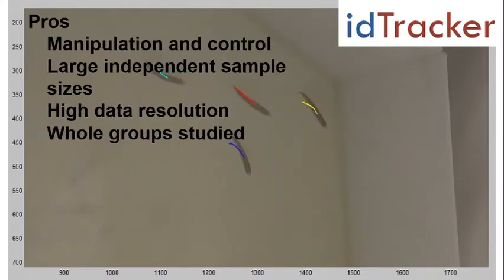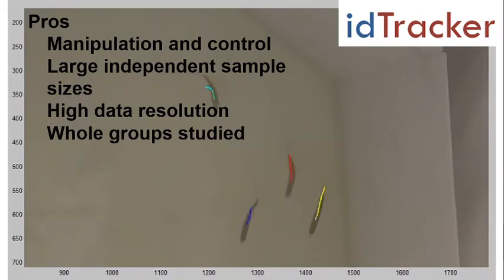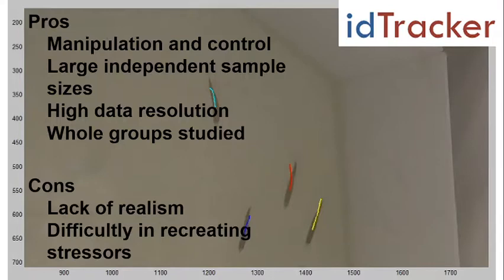Some of the pros are typical of lab work in general, but there's also the benefit that all individuals in the group can be monitored, which is needed for calculating social variables. If only a small portion of the group can be monitored — for example if loggers attached to only a small minority of the group are possible — then social parameters can't reliably be measured if you don't know where most of the other individuals are. But like many other lab studies, there's a loss of ecological relevance, and in general for investigating multiple stressors in the lab, recreating realistic stressor conditions can be tricky.